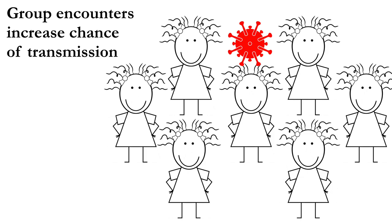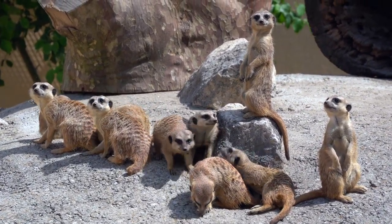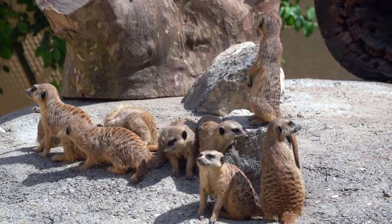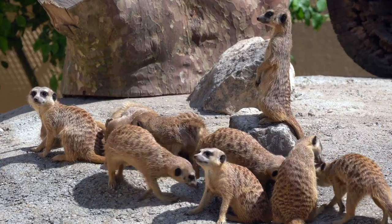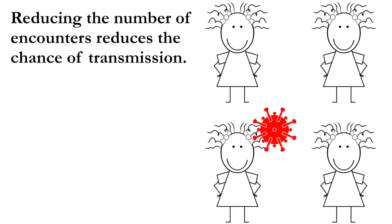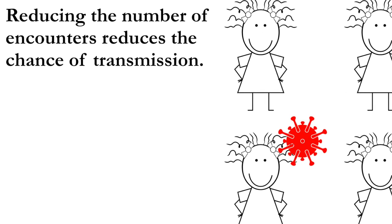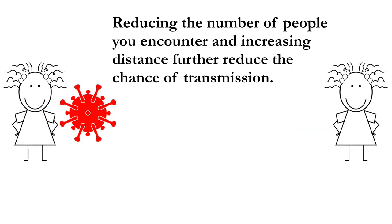Another thing that increases the chance of transmission is encountering more than one person. Here Emily is in a group of six friends. If you have six people around you, you've multiplied that transmission probability by six. The more time you spend together and the closer you are, the more the chance increases. Not having groups packed closely together reduces transmission. If instead of seven people you have four, you've only multiplied the probability by three instead of six. If it's just you and one other person staying six or more feet apart, you're dramatically reducing the chance of transmission.